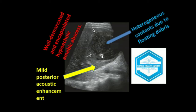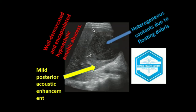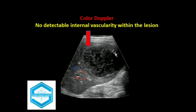This is a typical lesion which is well-demarcated, encapsulated, and hypoechoic. It contains heterogeneous contents due to floating debris, and there is also posterior acoustic enhancement. On color Doppler, the same lesion does not show vascularity within the lesion.